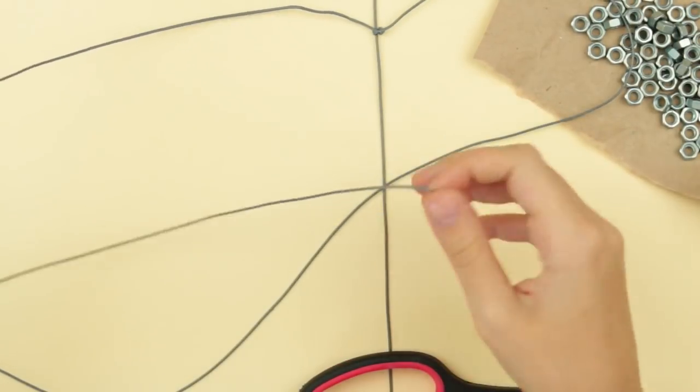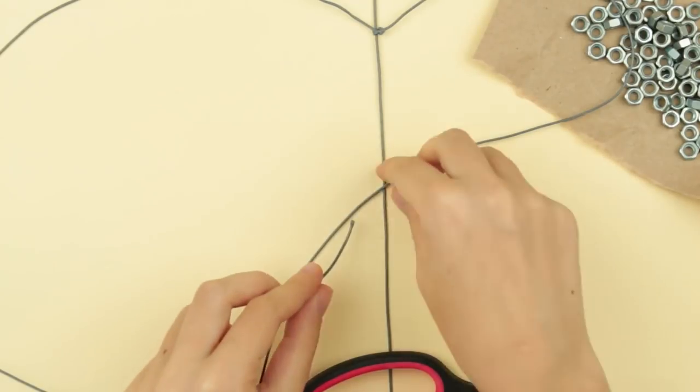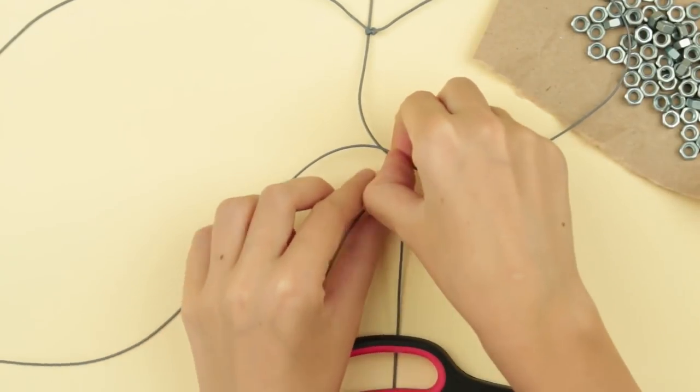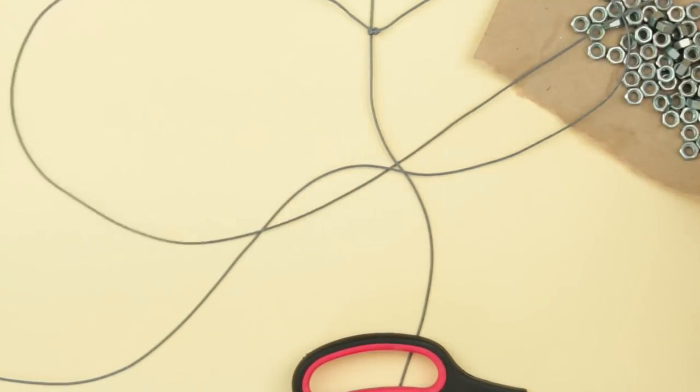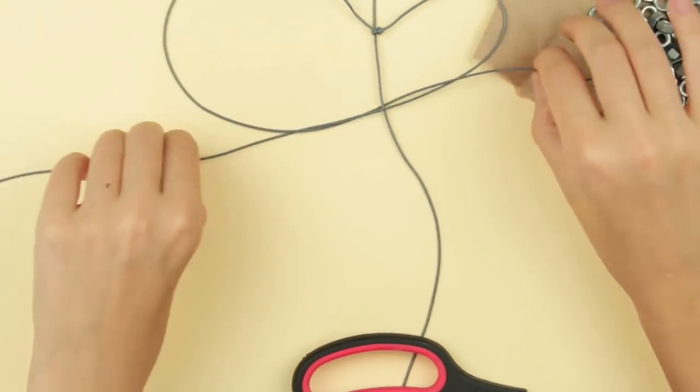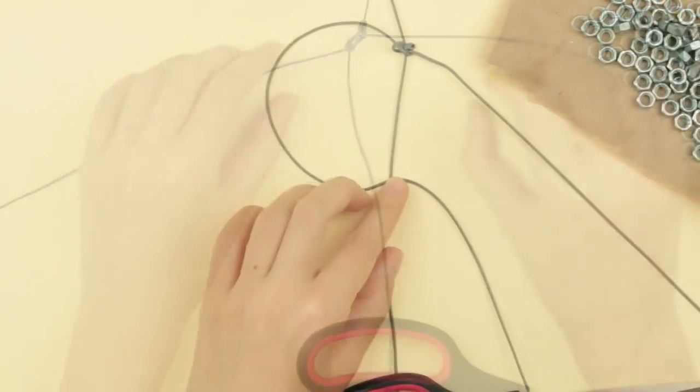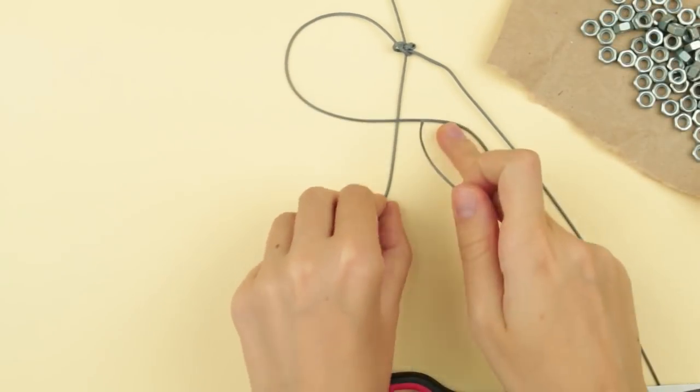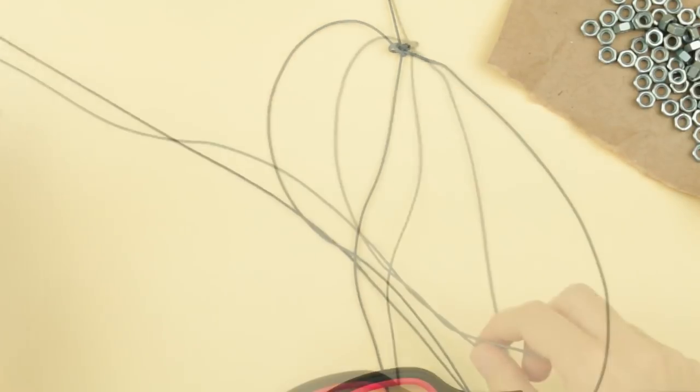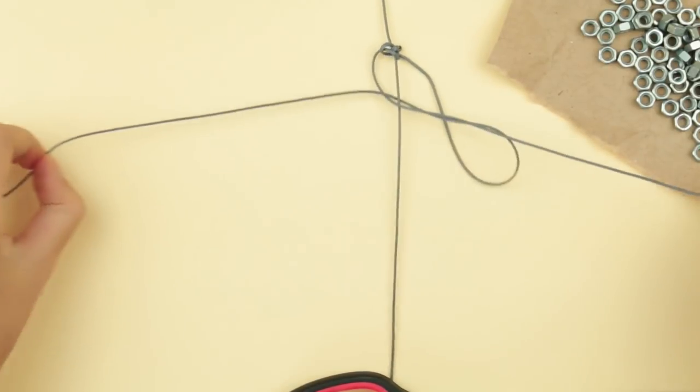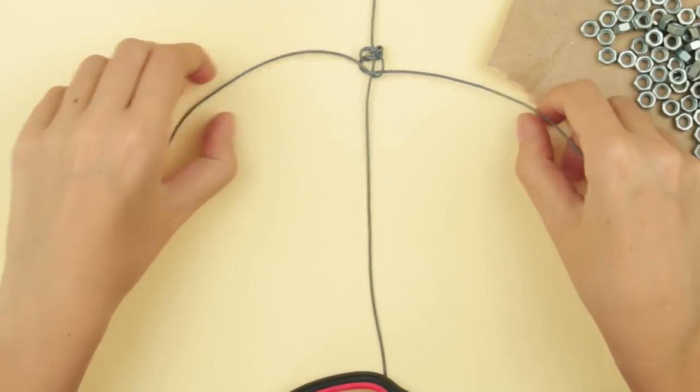Start weaving. Take the right strand and cross over the center cord. Take the left strand and pass it under the cross. Move from the bottom upwards. Pull a knot using both ends. Now the left strand. Cross the center cord and pass the right strand under the point of the intersection, bottom up. Pull a knot again. That's the beginning.